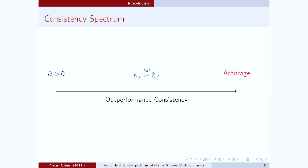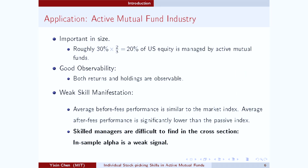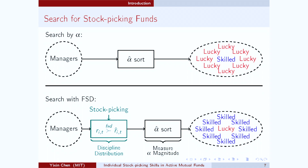Since first-order stochastic dominance is such a strong statistical condition, it sets a very high bar for the investors. That's why when we apply this test to the active mutual fund industry, we are able to identify a group of mutual fund managers who are very skilled and are able to deliver very large and appealing out-of-sample performances. So let me show you how to construct the test.